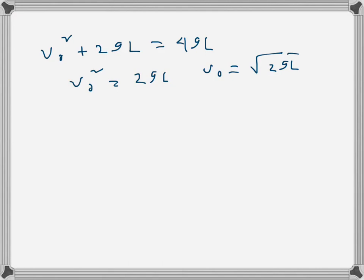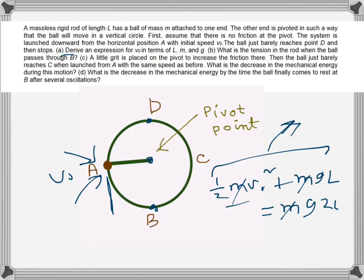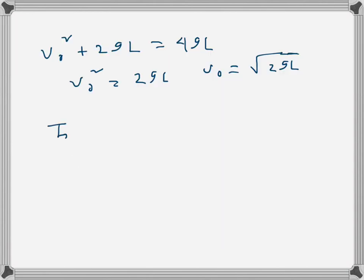For part B, we need the tension in the rod when the ball passes through B, the lowest point. At point B, both the centripetal force requirement and the weight act downward, so the tension T_b must supply the net upward force: T_b equals m·v_b squared over l plus mg, where v_b is the speed at B.